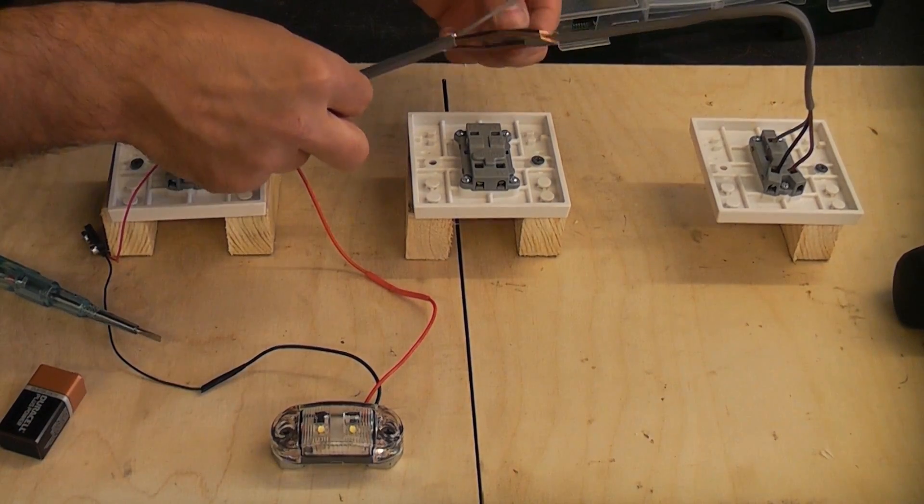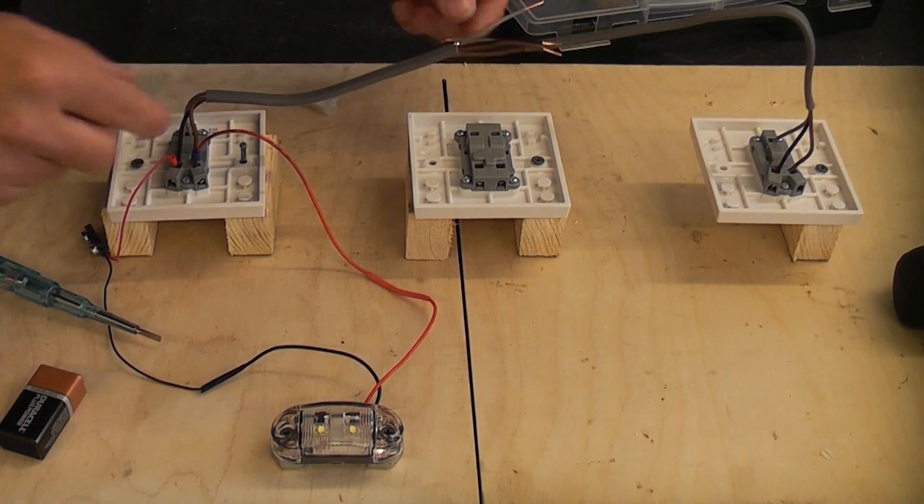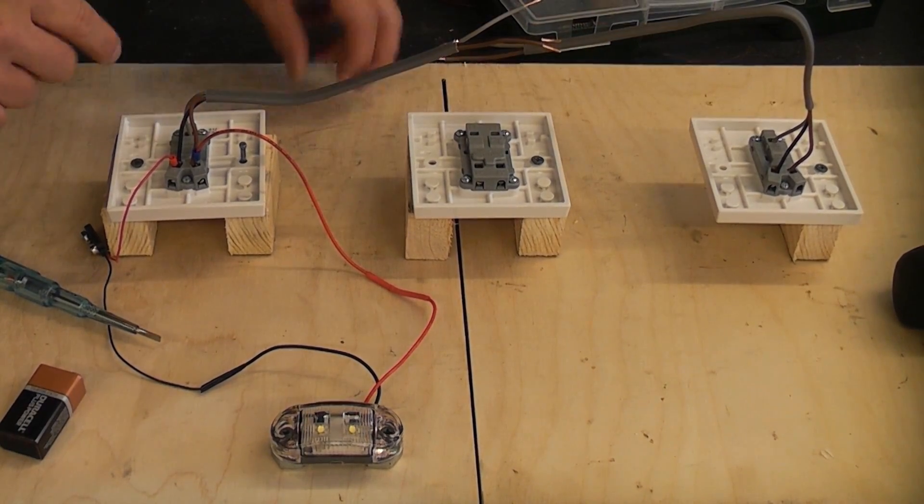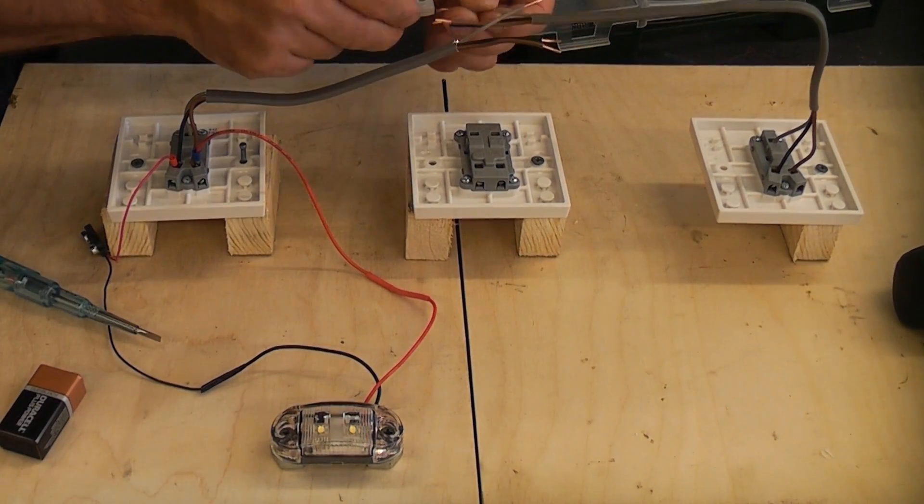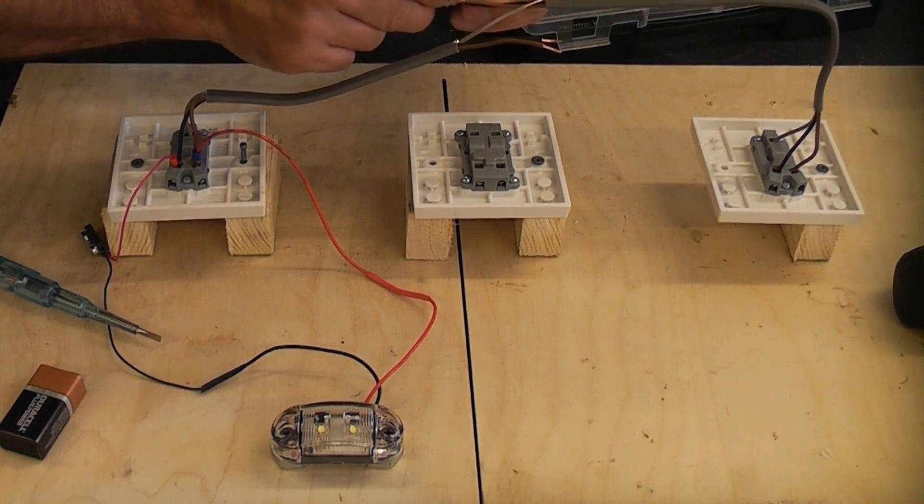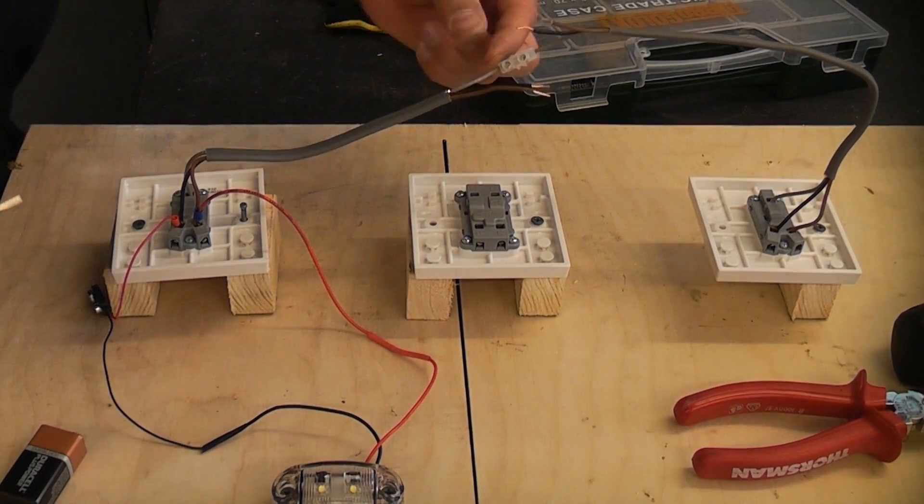We've now got the two cables that have been run to the intermediate switch. The first thing we're going to do is we're going to join the two comms together. So we need to get a terminal like that and in there we're going to put the comm from both of the light switches. So the comm wire now goes straight through.